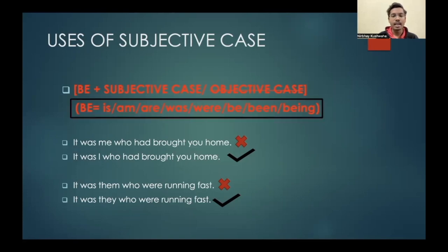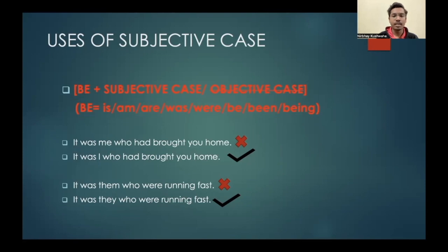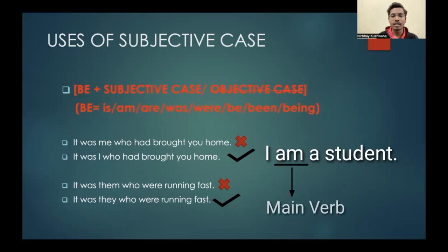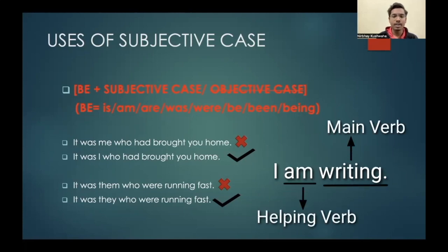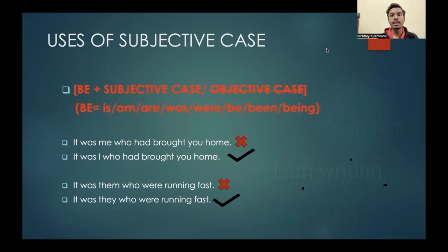The forms of 'be' are: is, am, are, was, were, be, being. But be careful that the 'be' used here is the main verb, not a helping verb. We can understand the difference with an example: 'I am a student' — here 'am' is the main verb. Now consider another sentence: 'I am writing' — here 'am' is the helping verb and 'writing' is the main verb. So be careful that 'be' in the subjective case rule is always the main verb.